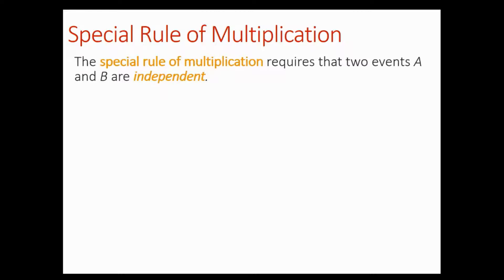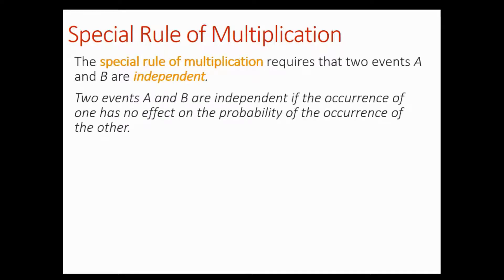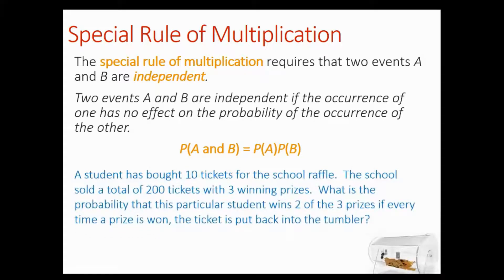Let's see a couple of examples. The special rule of multiplication, as we mentioned, requires that two events A and B are independent — meaning the occurrence of one has no effect on the probability of the occurrence of the other. So this uses: the probability of A and B equals the probability of A times the probability of B.